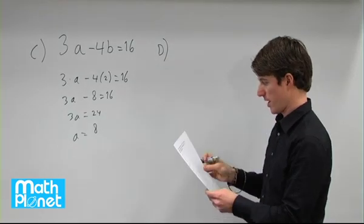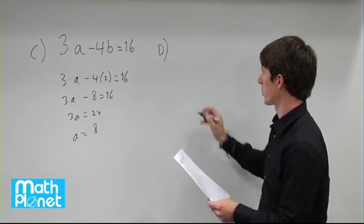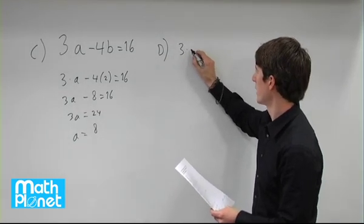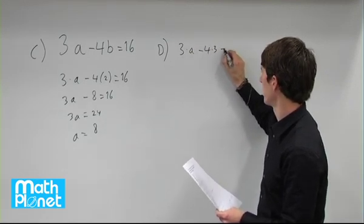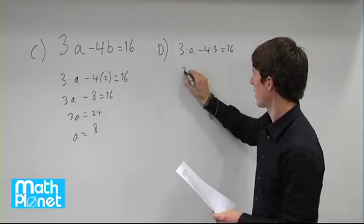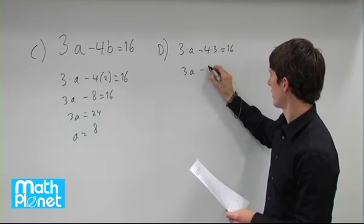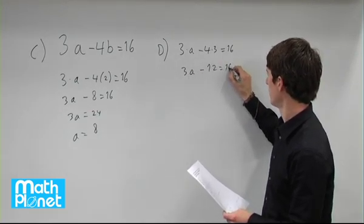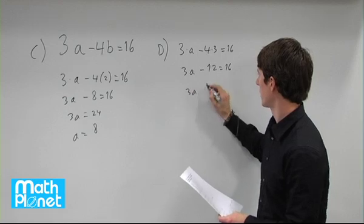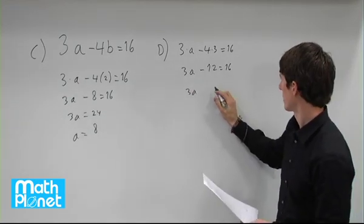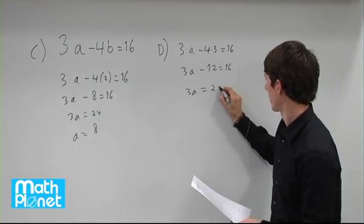d says b is equal to 3. So let's try that one. 3 times a minus 4 times 3 equals 16. 3a minus 12 equals 16.